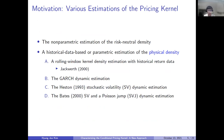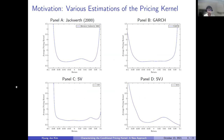To motivate what I'm going to do next, let me give some examples of estimations of the pricing kernel. Following the convention, I nonparametrically estimate the risk-neutral density. For estimating the physical density, I used four different approaches: a rolling window estimation with historical return data following Jackworth's 2000 paper, the GARCH dynamic estimation, the stochastic volatility dynamic estimation, and the stochastic volatility with a Poisson jump dynamic estimation. This figure shows the average of the conditional pricing kernel estimates for different specifications — the x-axis is the monthly market return and the y-axis represents the average pricing kernel. It is very clear that they are non-monotonic, but the shapes differ a lot across different specifications.